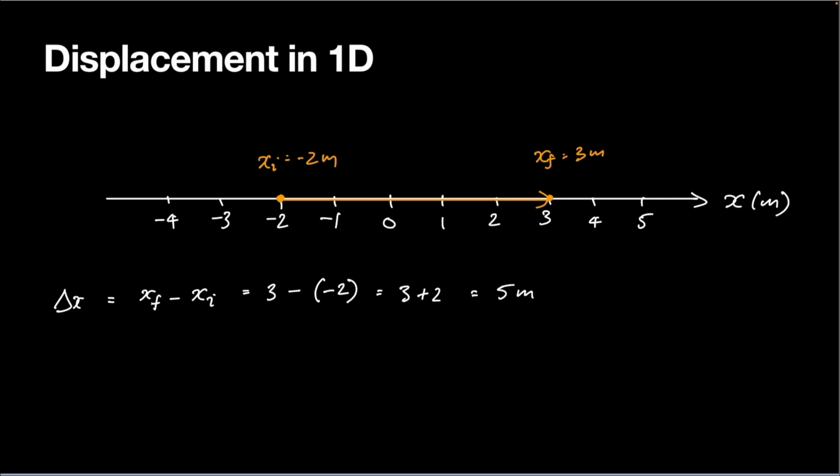Okay, where's the direction gone? Well, the direction is basically encoded in the sign of this value. Because this is positive, I can interpret that as moving to the right.